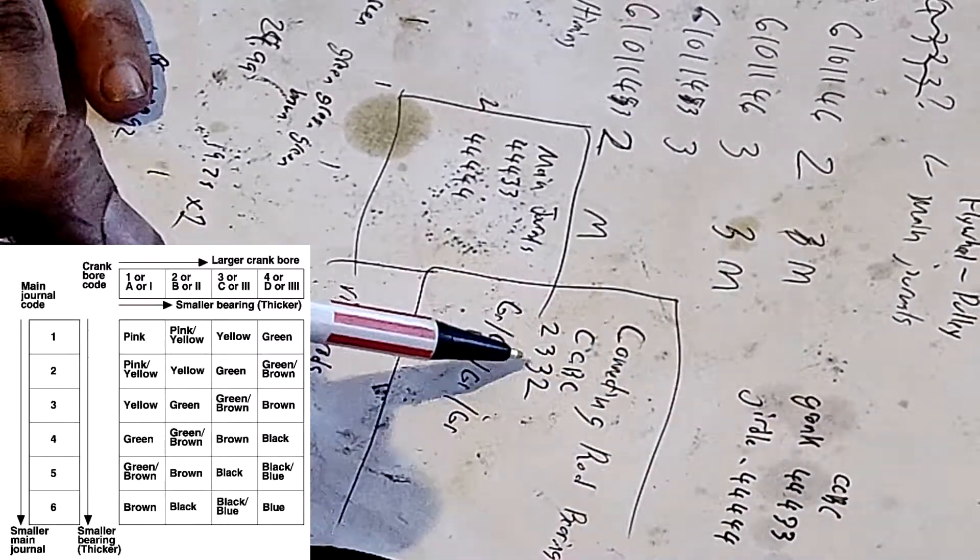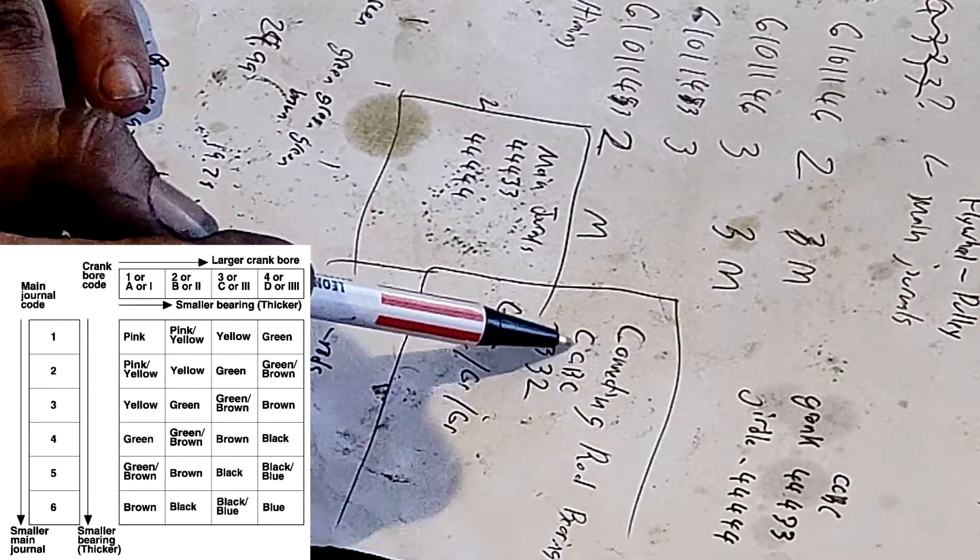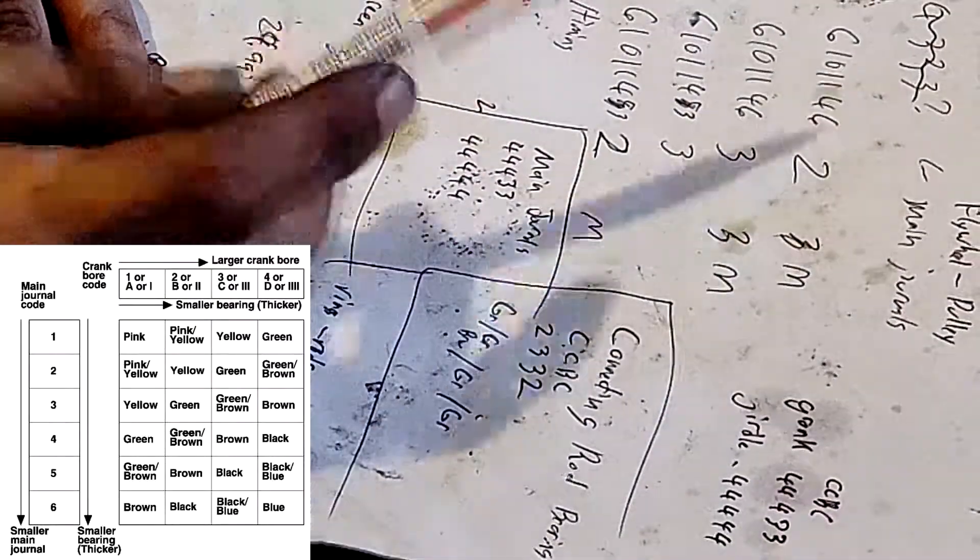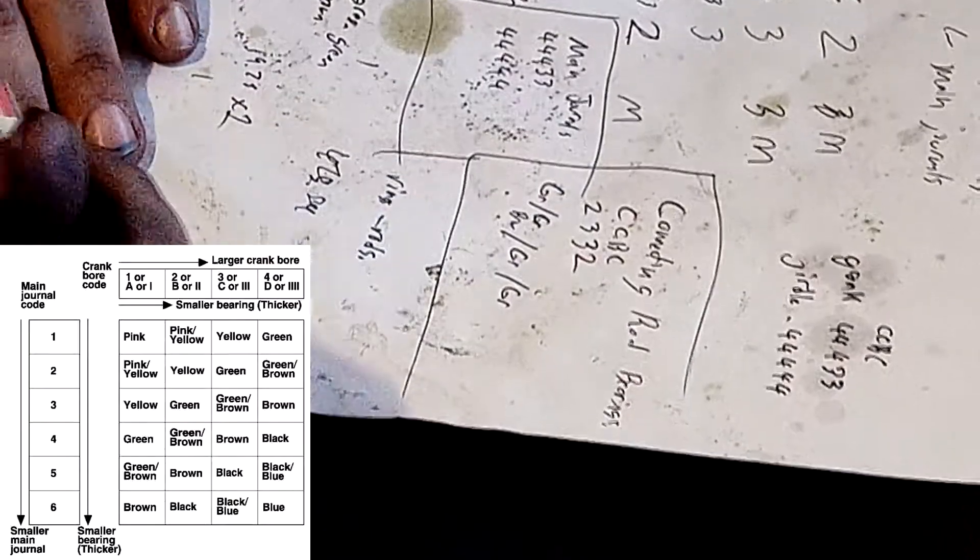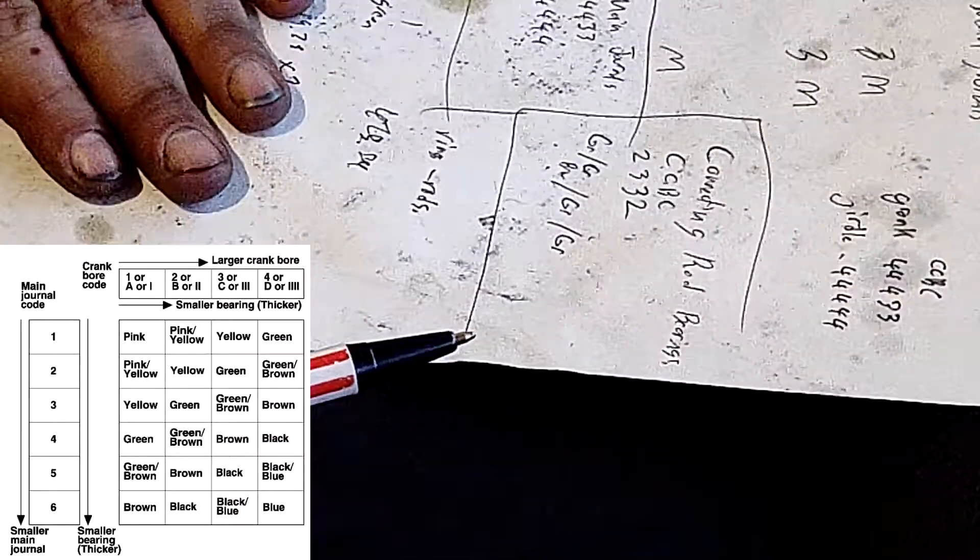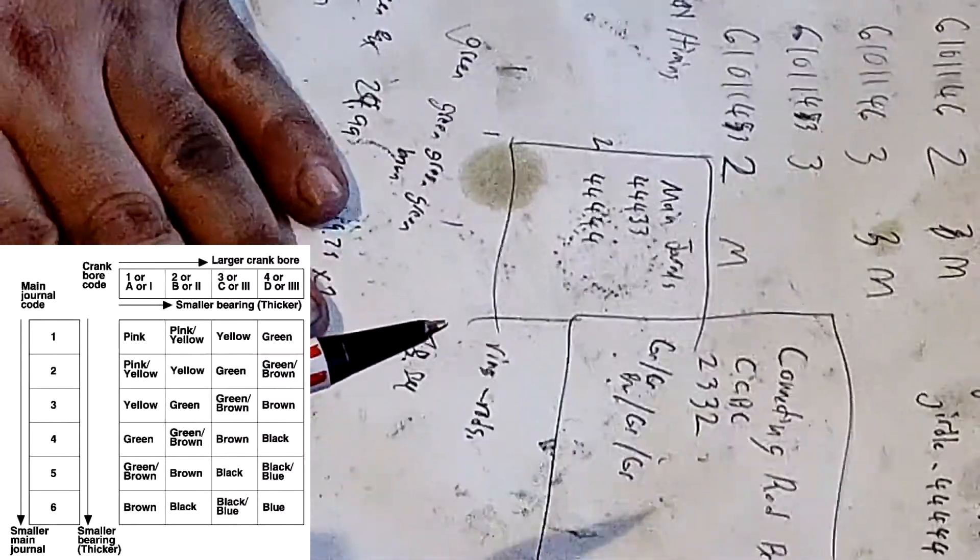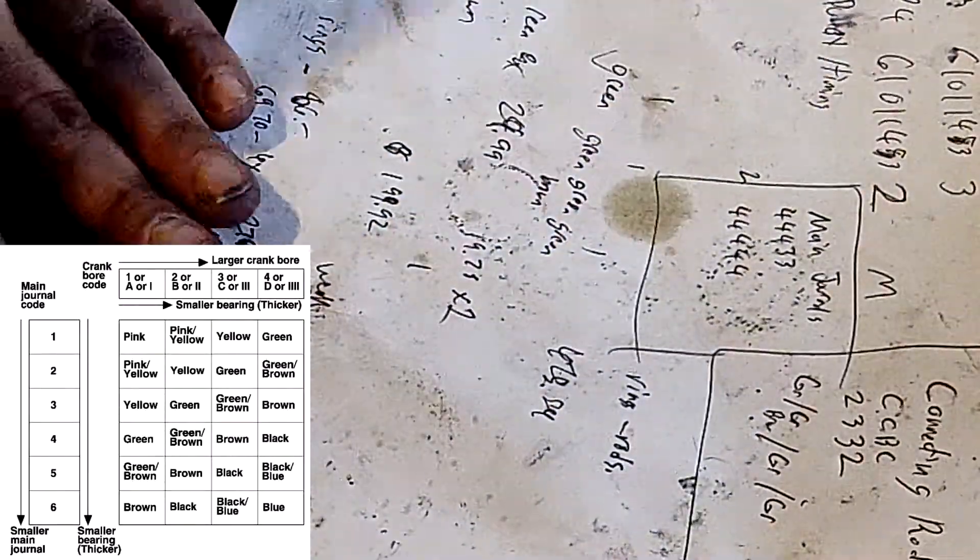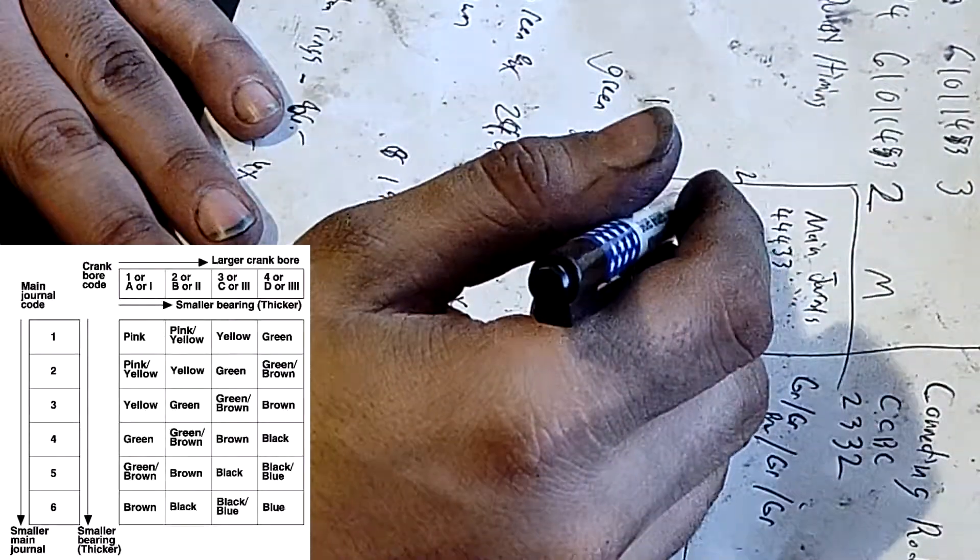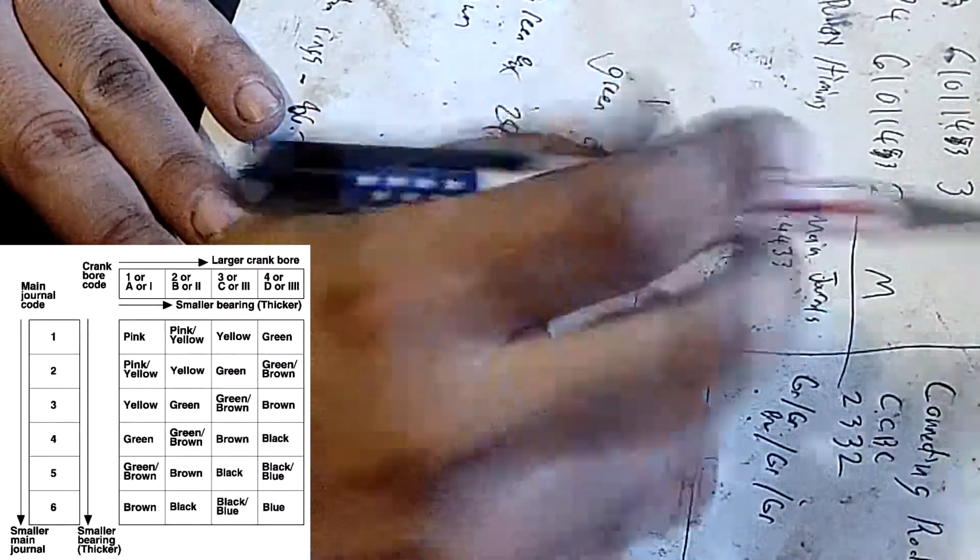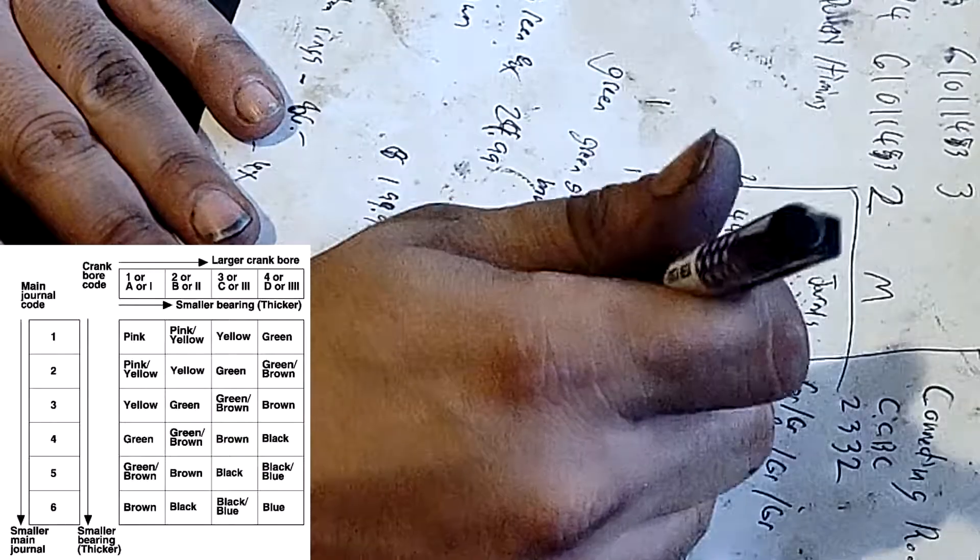Now we use letters here, you can either have letters, numbers, or markings as you can see in the little corner here. We know our crank bore code which is on the crank can either be a number, a letter, or a marking, but these are numbers.